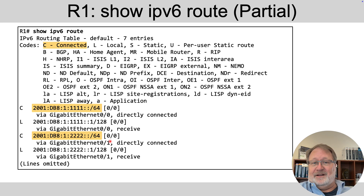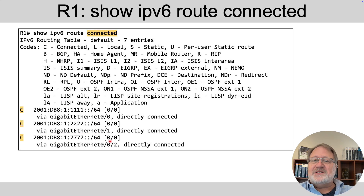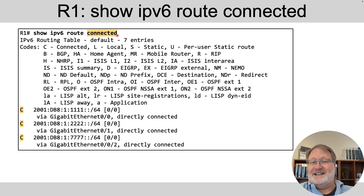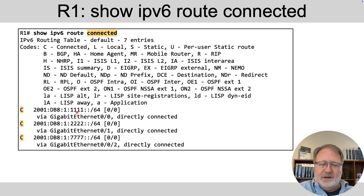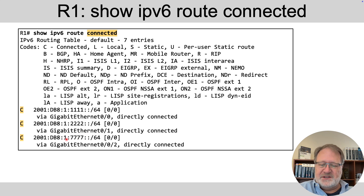In a lab with two or three interfaces this is fine, but in real life with tens or hundreds of interfaces on a router, that can be cumbersome. So it's nice to use the command show IPv6 route connected, which shows only the connected routes. If we did that on router R1, we'd see just the three connected routes on those three interfaces — one for the top subnet off Gig 0/0, one for the bottom subnet off Gig 0/1, and one for the WAN subnet connecting toward router RC off Gig 0/0/2.